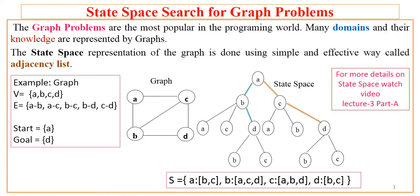State space implementation of a graph is done using a simple and effective way called the adjacency list. To understand more about state space, I request you to watch video lecture 3, Part A of this series, so that you will get a clear idea of what state space is.